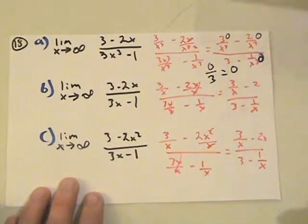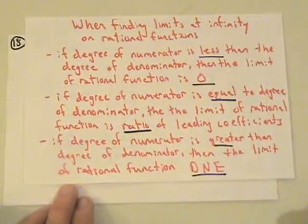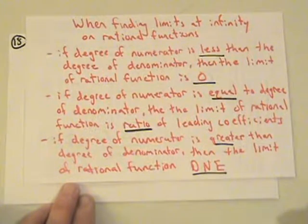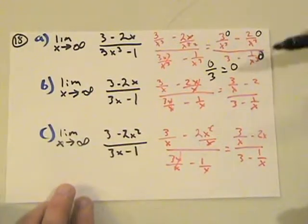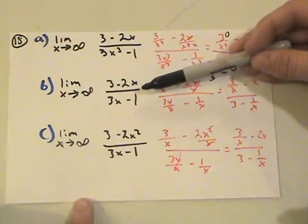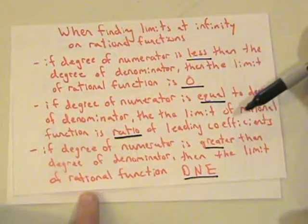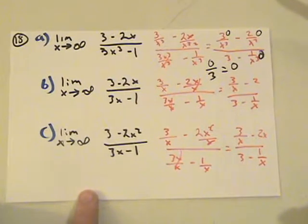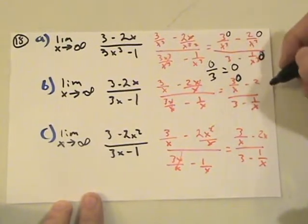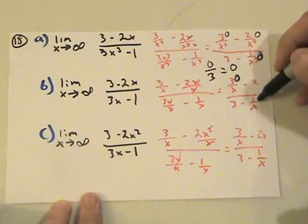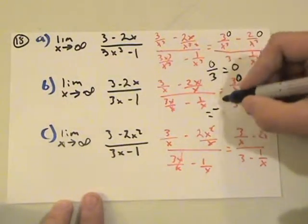Looking back at the guidelines for infinite limits: when the degree of the denominator is greater than the numerator, it equals zero — and that proves this is right. For part B, the degree of the numerator and denominator are equal, so following the guidelines, that's just the ratio of the leading coefficients. We get 3 over x minus 2, with zero minus 2 in the numerator and 3 minus one x in the denominator, giving 3 minus 2 over 1. So the limit equals negative two thirds, which confirms it.